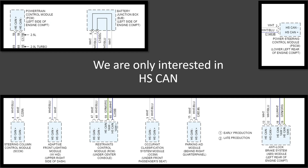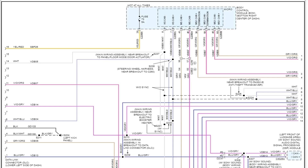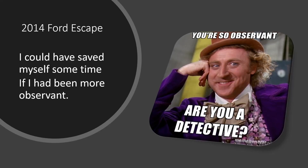We are only interested in the high-speed CAN since that is where all the critical modules are, like the PCM. Starting at the BCM, we can follow the high-speed CAN circuit to a splice that goes to the DLC along the left side, down to a couple of modules at the bottom, but most of it leads to another page where the majority of the high-speed CAN modules are. I connect a breakout box to the DLC and connect the Pico to pins 6 and 14. I could have saved myself some time had I been paying more attention at this point — there was something I didn't see that we will go over later.